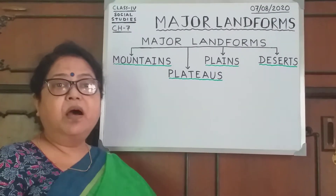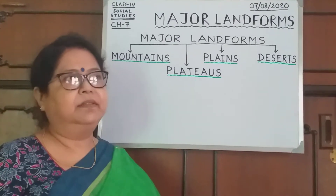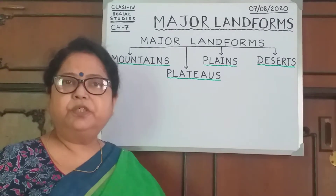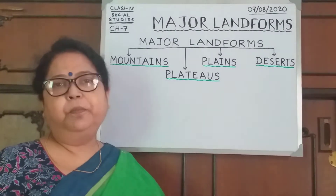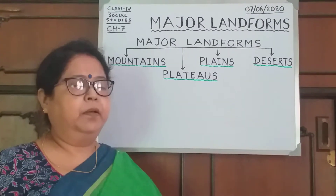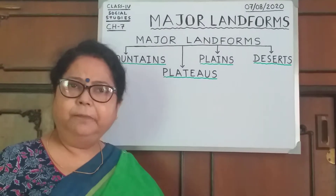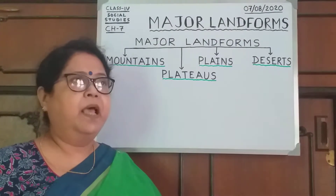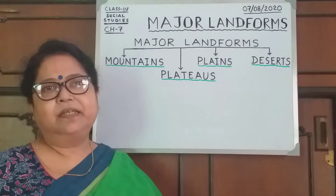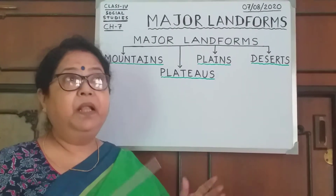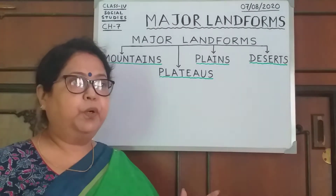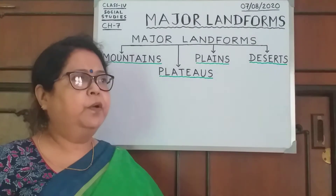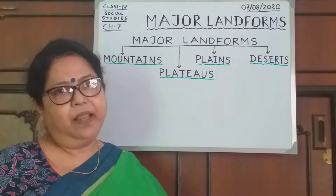Plains are vast stretches of flat land, and these plains are formed due to deposition of materials brought down by the rivers. This plain land is very fertile due to the deposition of rivers and their tributaries, mainly because of the silt. In this plain land, buildings, transport and communication are very easy to build up. So a large number of people live in the plain areas.